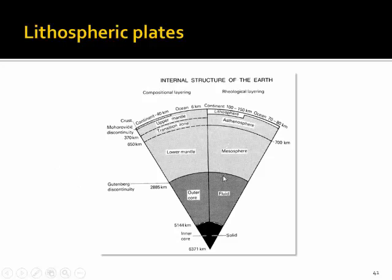The asthenosphere and mantle are underlain by the liquid outer core. The outer core is the only large reservoir of melt on planet Earth — a liquid, iron-nickel-rich alloy that behaves like a molten metal. It is underlain by the solid inner core, which is identical in material to the outer core, but high pressure in the core converts what is liquid in the outer core into a hot, solid material.